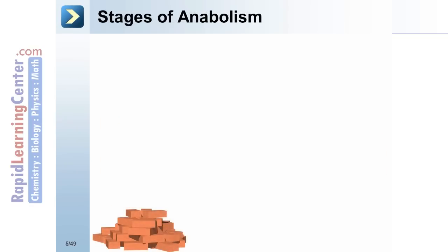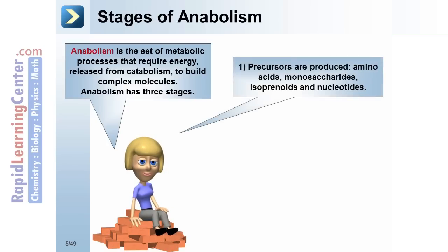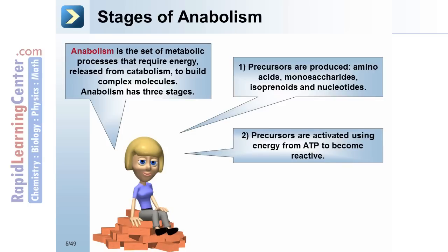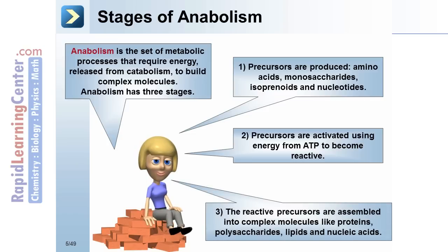Stages of anabolism. Anabolism is the set of metabolic processes that require energy to build complex molecules. Anabolism has three stages. Stage one: precursors are produced — amino acids, monosaccharides, isoprenoids, and nucleotides. Stage two: precursors are activated using energy from ATP to become reactive. Stage three: the reactive precursors are assembled into complex molecules like proteins, polysaccharides, lipids, and nucleic acids.